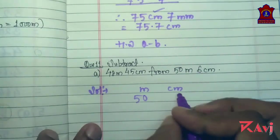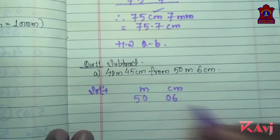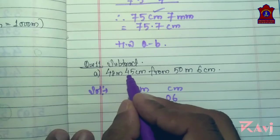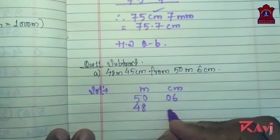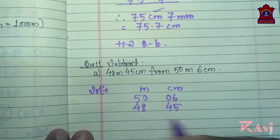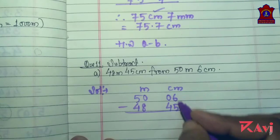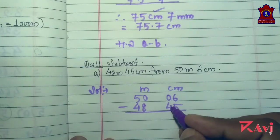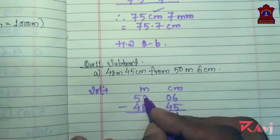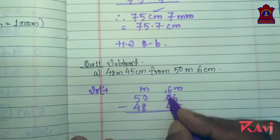We are subtracting this from this, so this will come at the top. 50 and here's 6 centimeters. 6 can be written as 06. Now 48 meter 45 centimeters, so write 48 and 45. Now subtract. 6 minus 5 is 1.